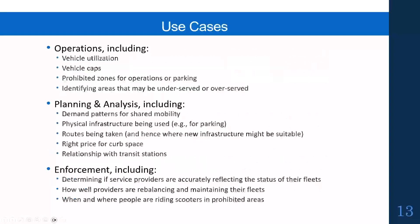At the same time, there are concerns that some data may be personally identifiable to users of these services, and some data may be proprietary to vendors — information they wouldn't want shared with competitors. The uses for this data fall into three broad areas: managing operations, such as tracking how vehicles are being utilized to set caps, prohibit operations, or establish parking areas like scooter corrals; broader planning and analysis, such as integrating shared mobility for last-mile transit connections; and enforcement activities to ensure providers are following all rules and regulations.